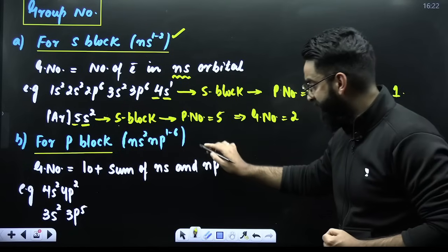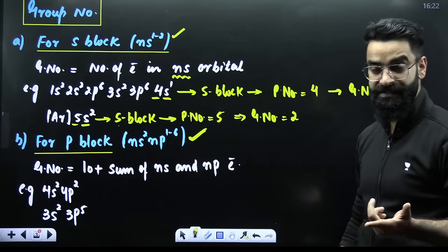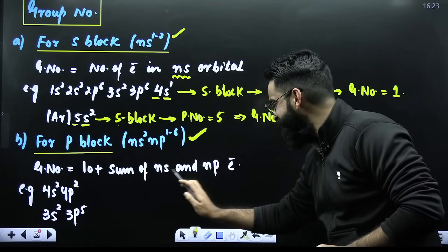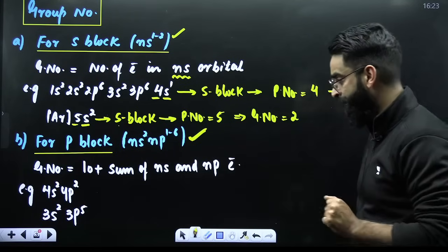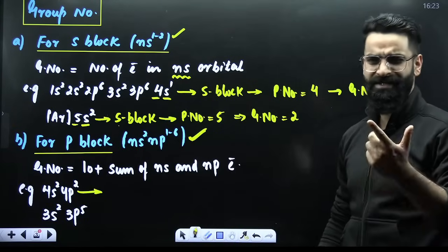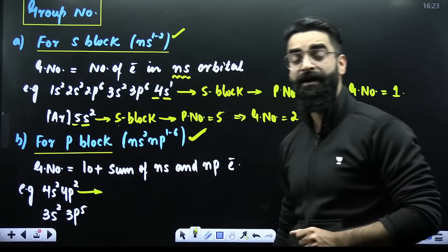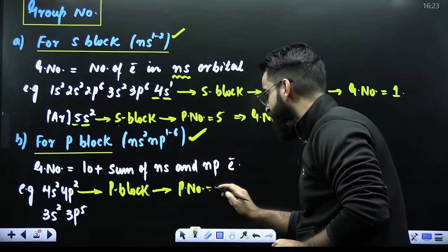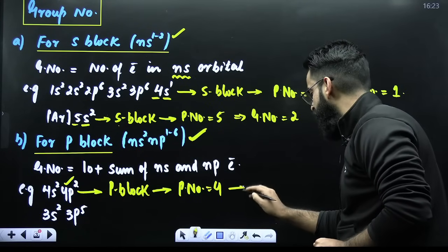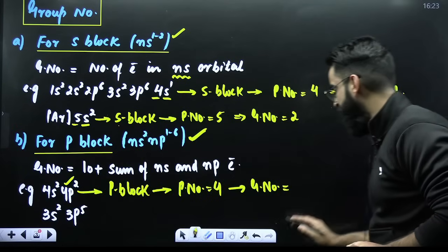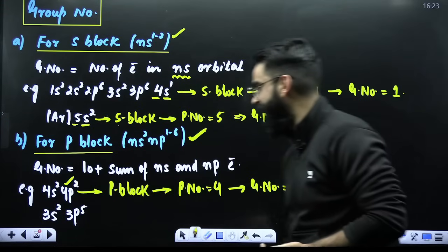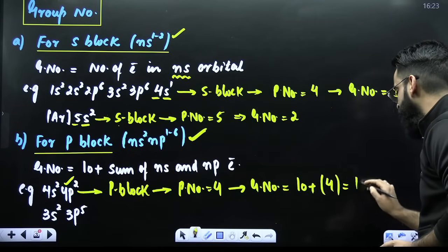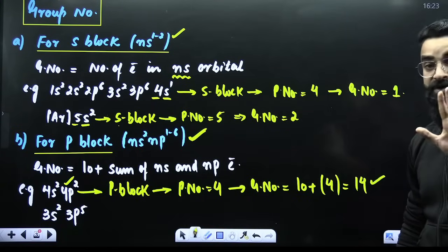Similarly, in case of P block elements, the general outermost configuration is NS², NP¹ to NP⁶. The group number formula is: 10 plus the sum of NS and NP electrons. For example, if the last electron has entered the P orbital, it is a P block element. If the highest principal quantum number is 4, its period number is 4. Group number equals 10 plus (NP electrons + NS electrons) = 10 + (2 + 2) = 10 + 4 = 14. So this element belongs to the 14th group.